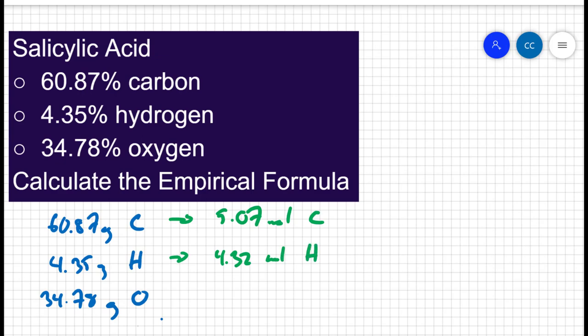And again, I'm just treating this as elemental hydrogen, not H2, because this isn't the pure element. This is in the compound of salicylic acid. Likewise, when I do this with oxygen, I'm not going to do O2. I'm just going to treat this as a single oxygen. And when I do that conversion, I get 2.17 moles of oxygen.